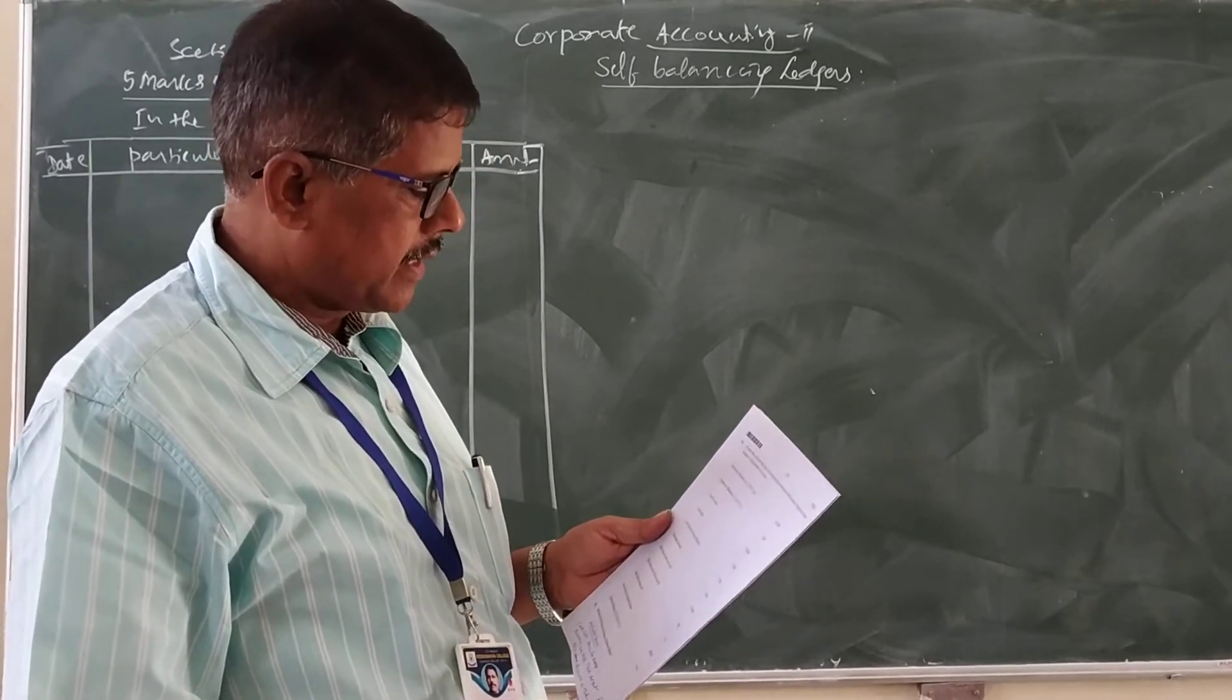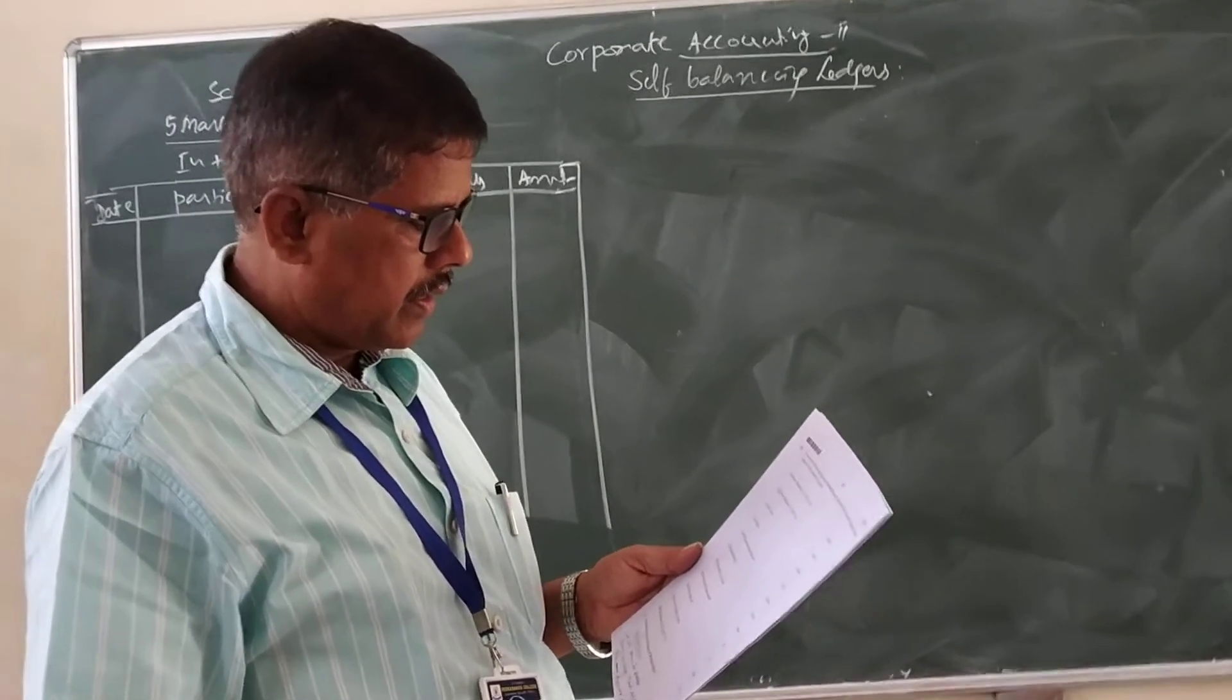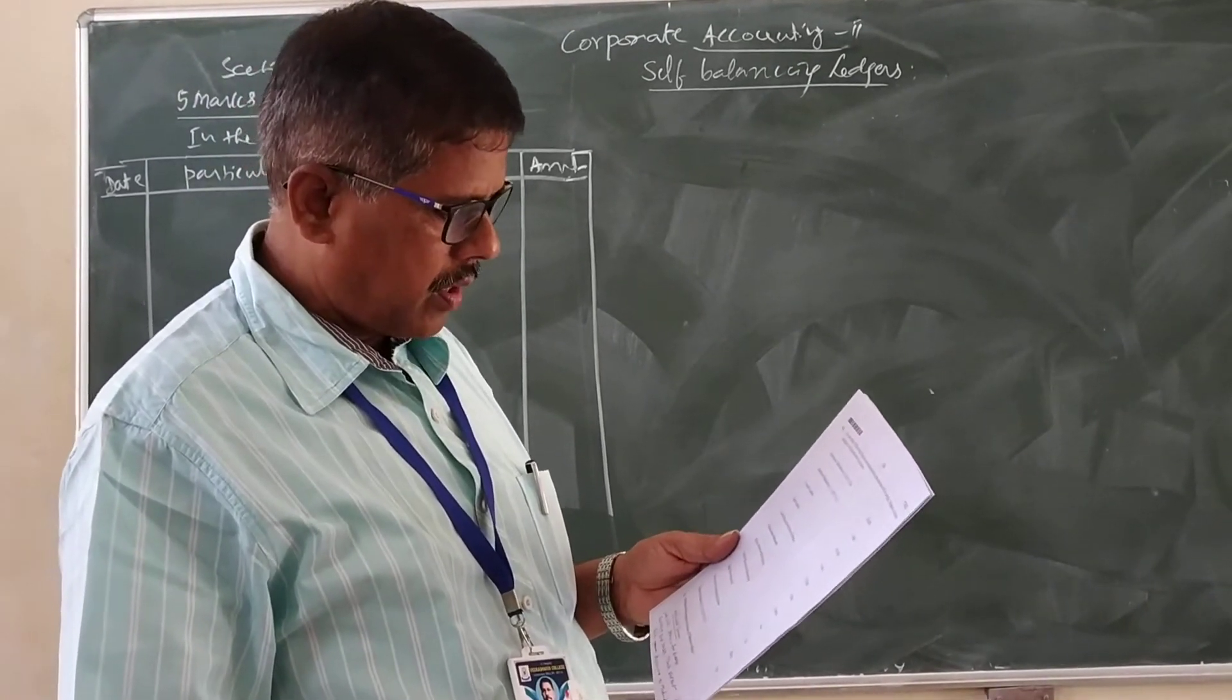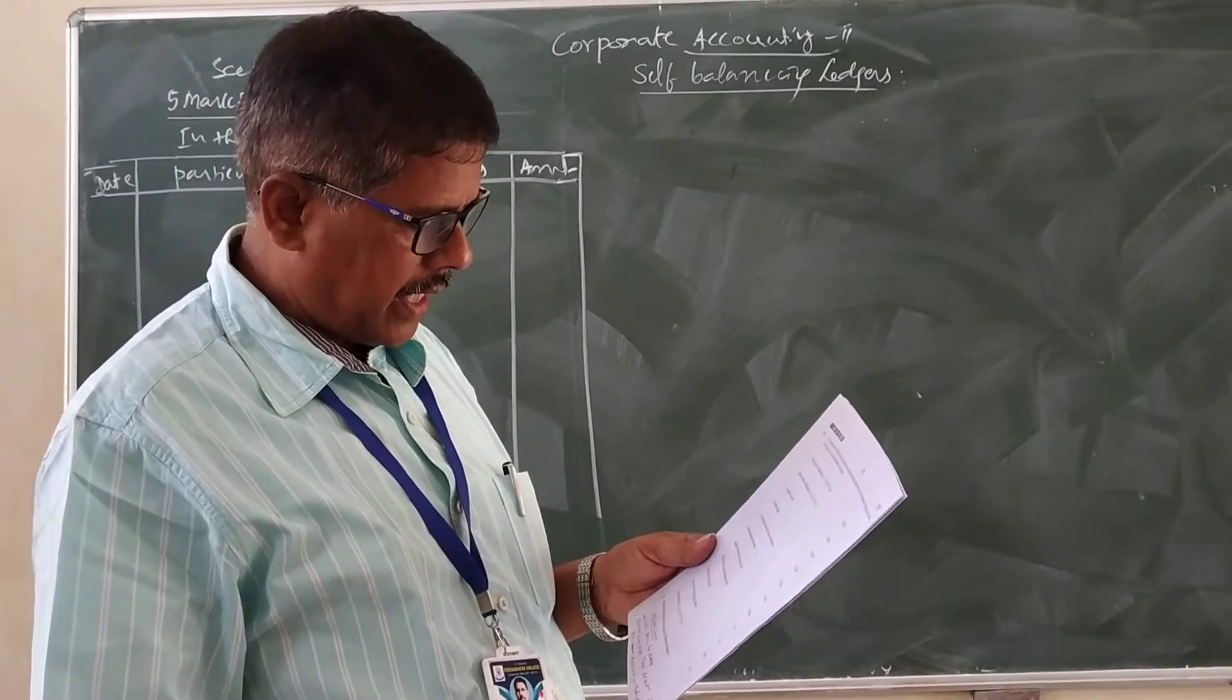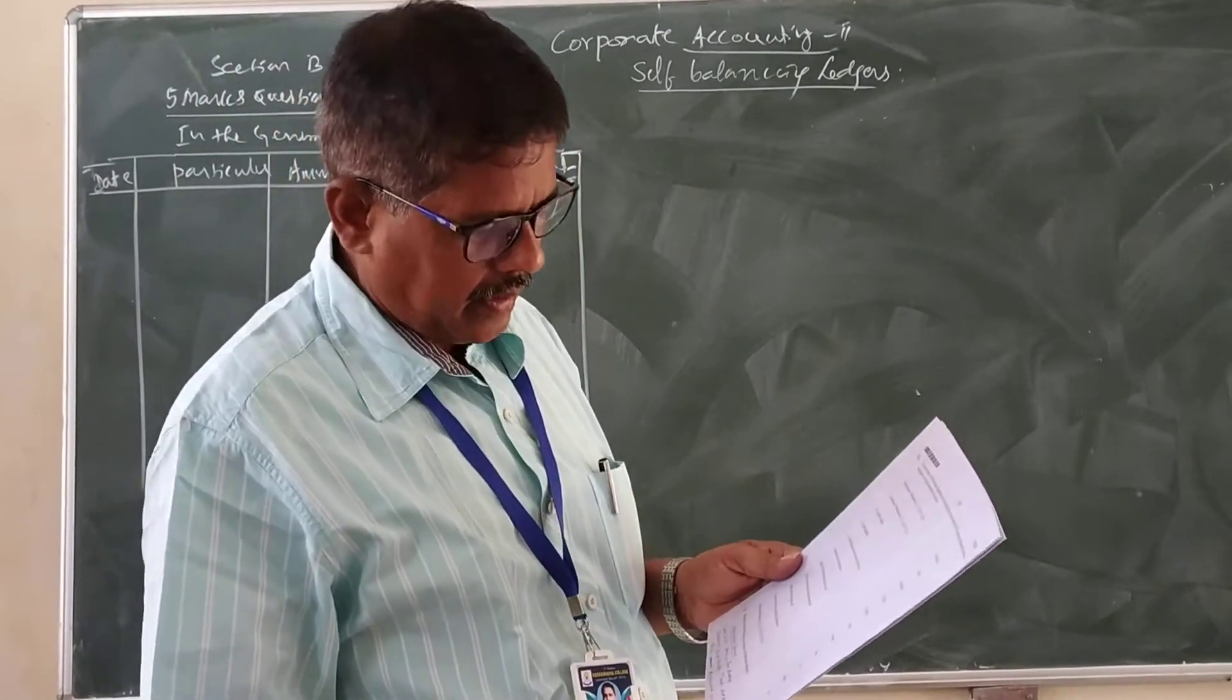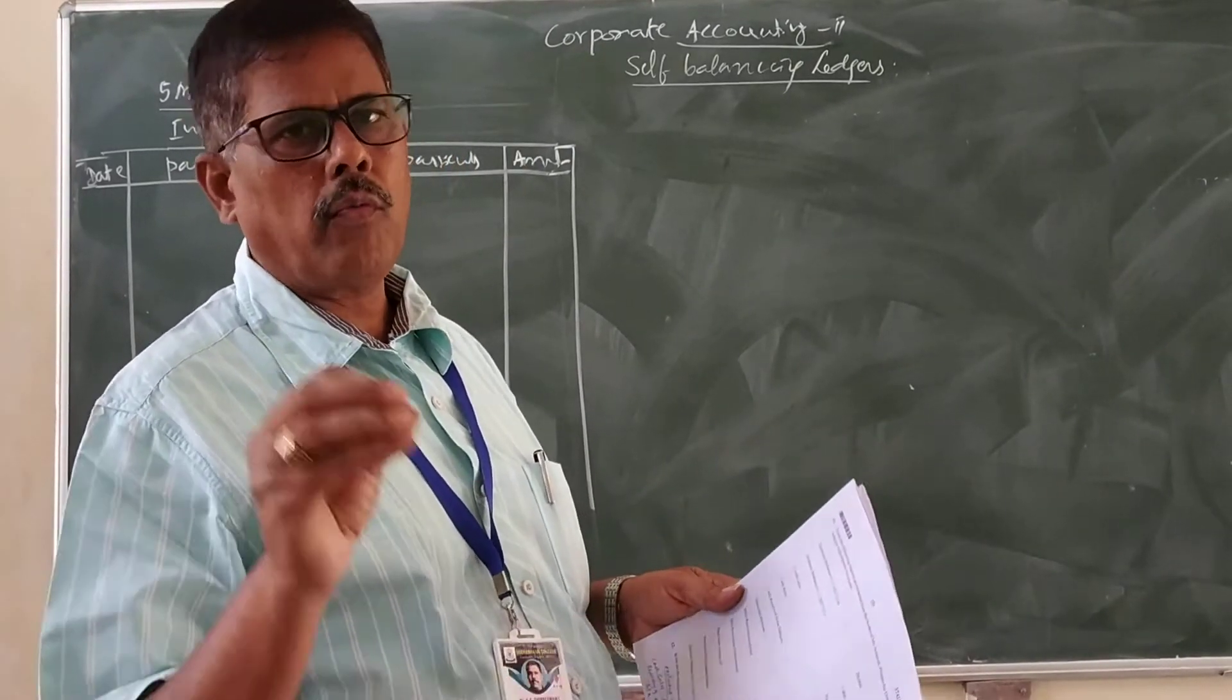Then credit sales, cash sales, cash received from debtors, discount allowed, bills receivable received, bills receivable dishonored, bad debts written off, provisions for doubtful debts, and debtor's balance on 31st December 2017, that is closing balance. This is a simple problem for 5 marks.